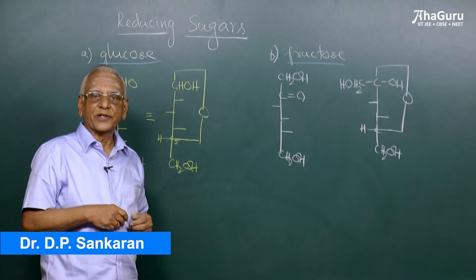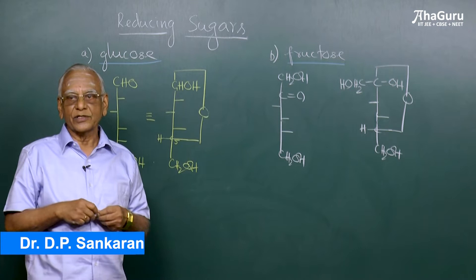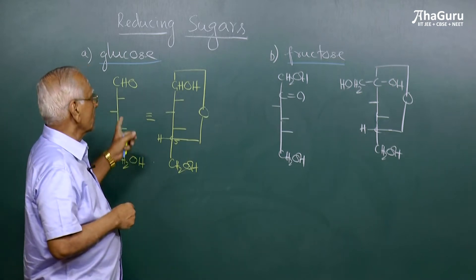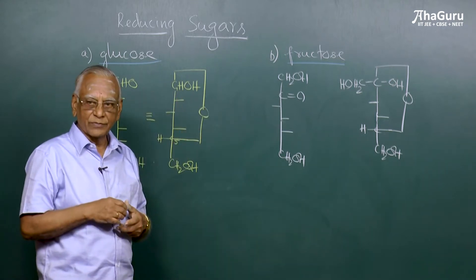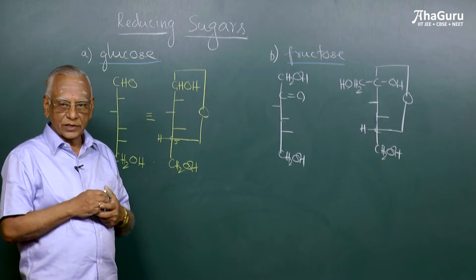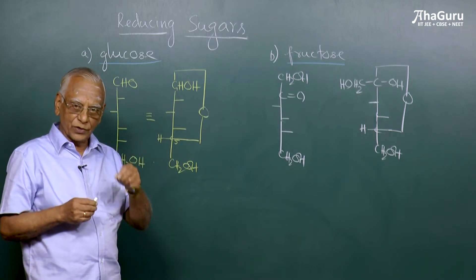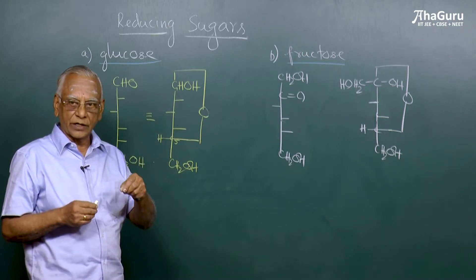Sugars can be classified into reducing sugar and non-reducing sugar. Glucose and fructose both of them belong to reducing sugar. Sucrose, the sugar that we use in day-to-day life, is a non-reducing sugar.